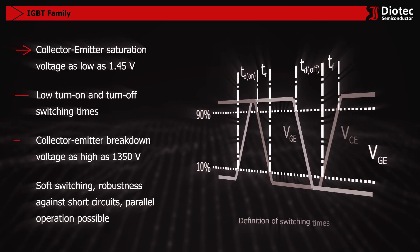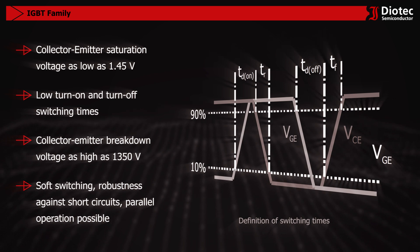The IGBT family features low saturation voltage, low turn-on and turn-off switching times, collector emitter voltages up to 1,350 volts, soft switching, robustness against short circuits, and parallel operation capability.